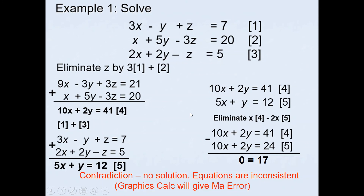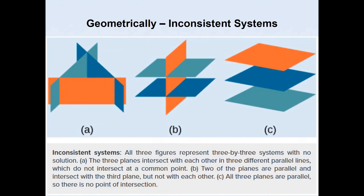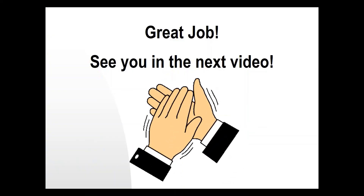Using a graphics calculator, it will give a math error. This is an inconsistent system — we know the planes are not all parallel, so it is not cases B or C. The arrangement is similar to a triangular prism, where three planes intersect each other along three different parallel lines that do not meet at a common point. Thanks for watching — I'll see you in the next video.